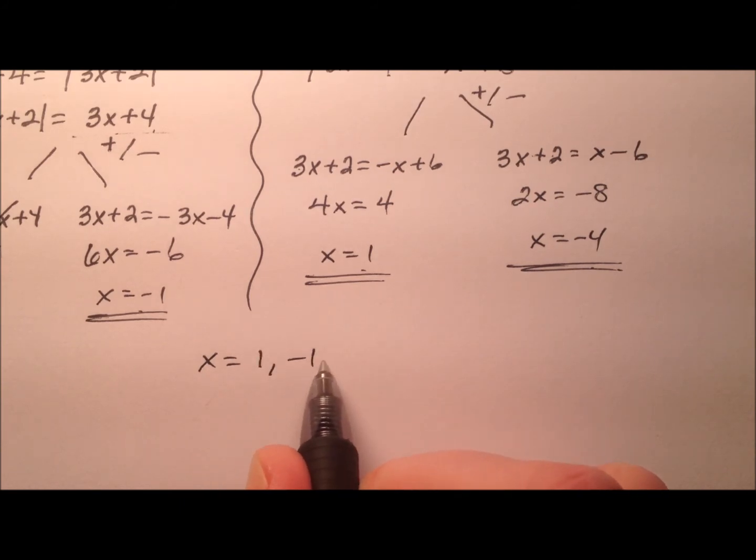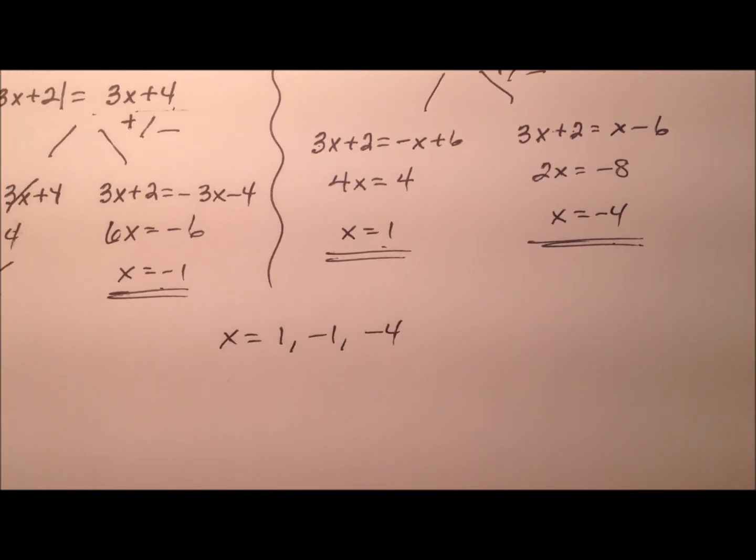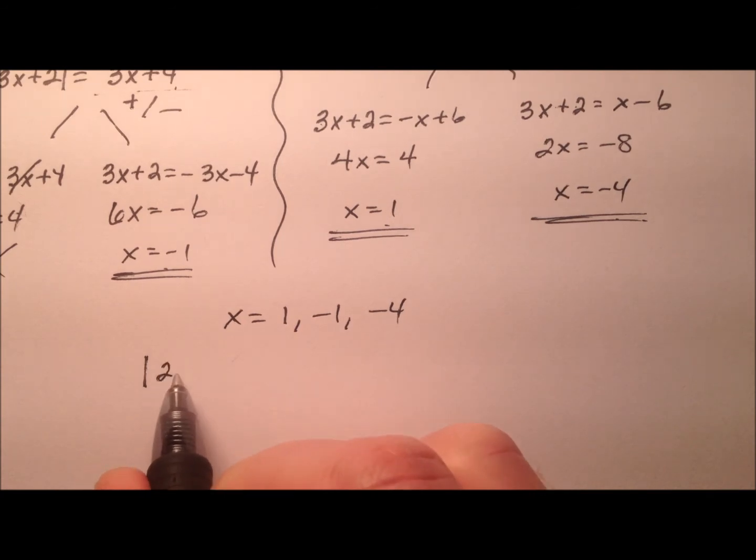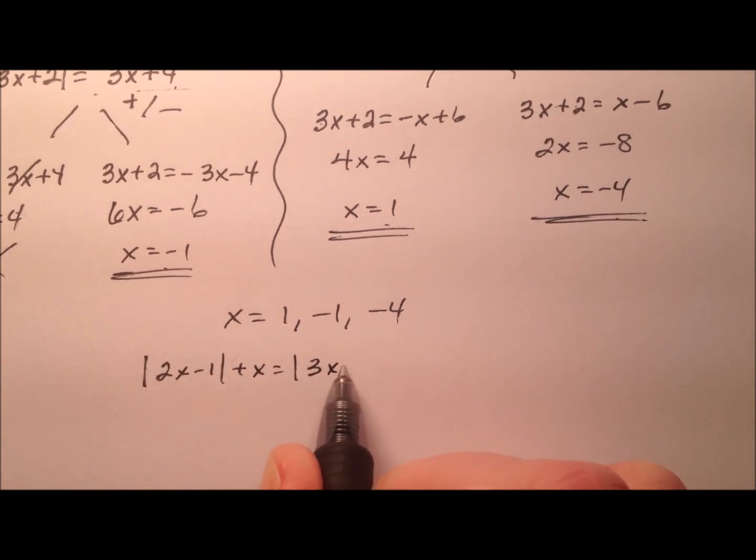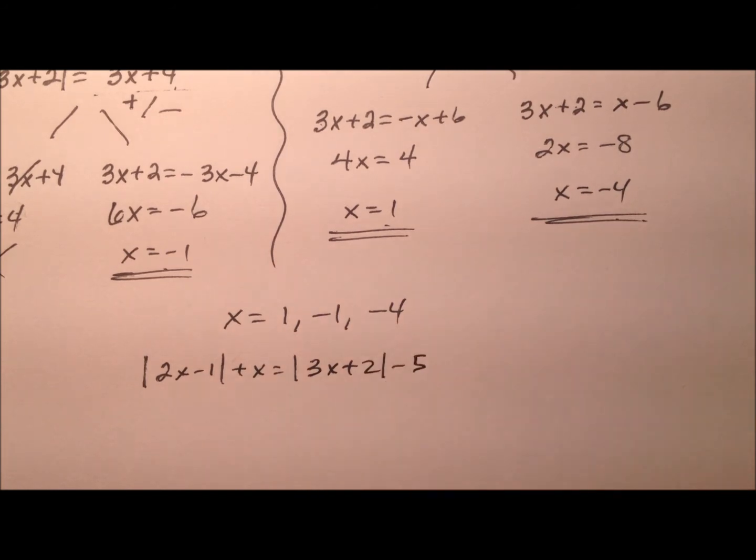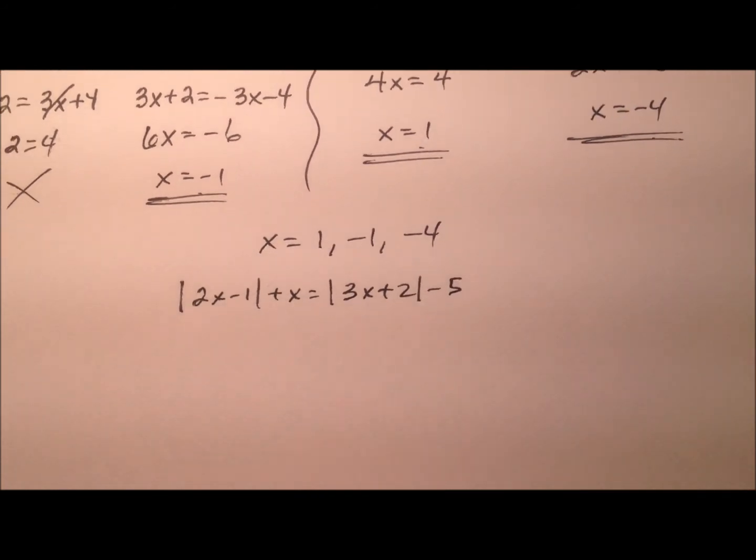So I'll say 1, negative 1, negative 4. Let's go ahead and rewrite the original equation. That way we can go ahead and check these values to see which ones work and which ones possibly are extraneous values.